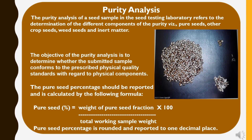Now to study about purity analysis, which represents the physical purity of seeds. The purity analysis of a seed sample refers to the determination of different components such as pure seed, other crop seeds, weed seeds and inert matter. The objective of purity analysis is to determine whether the submitted sample conforms to the prescribed physical quality standards with regard to physical components. The pure seed percentage is calculated by the formula: pure seed % = (weight of pure seed fraction ÷ total working sample weight) × 100, reported to one decimal place.